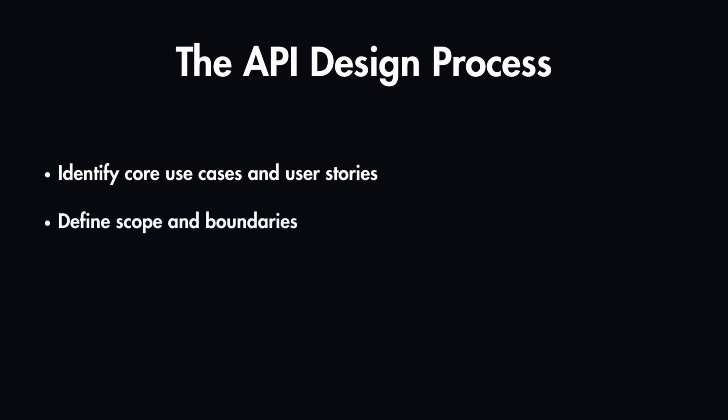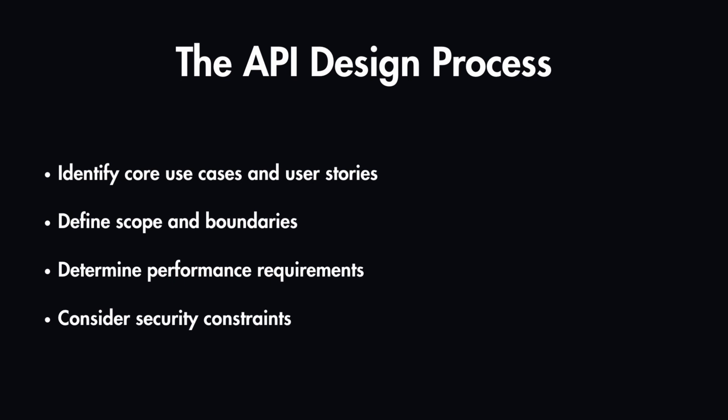If the API is large, scope it to specific features for the current phase and identify what is out of scope. You should also determine performance requirements, identify bottlenecks, and not overlook security constraints — implementing authentication, authorization, and rate limiting at a minimum, plus additional measures depending on the API.